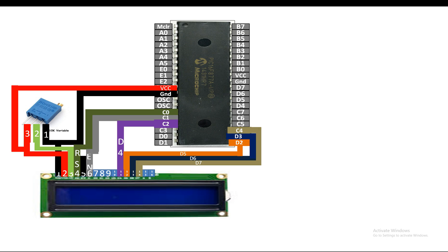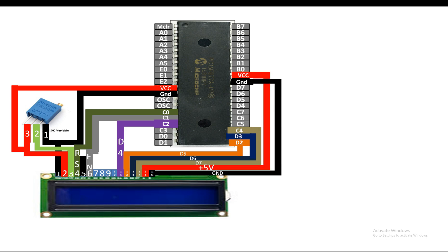Finally, pins 15 and 16 are for the LCD backlight — only connect them if your LCD has a backlight. Pin 15 is VCC and pin 16 is ground for the backlight. Pins 7, 8, 9, and 10 are for 8-bit mode — since we are using 4-bit mode, leave them floating, don't touch them.